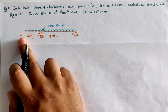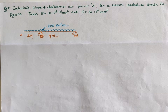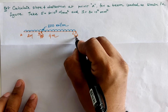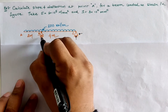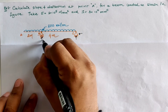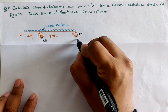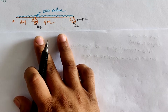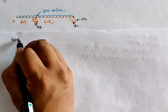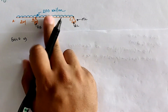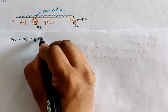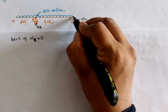For the analysis, we first calculate the support reactions. At a hinge support we have a vertical upward force and a horizontal force, and at a roller a vertical upward reaction — so the reactions are RB, RC, and HC. Taking the first equilibrium condition sigma H = 0, since there is no horizontal load, HC = 0.